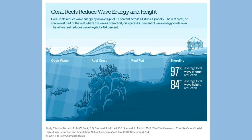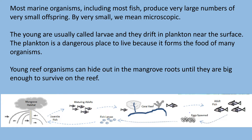Reefs make the water shallower, which slows waves down and may even make them break further out, protecting the coastline and the mangrove behind. Fish larvae tend to hang out in mangrove roots where it's protected and calm and they're less likely to get eaten, and then they go out to the coral reef when they're grown up. So mangroves and corals are symbiotic — they look after each other.